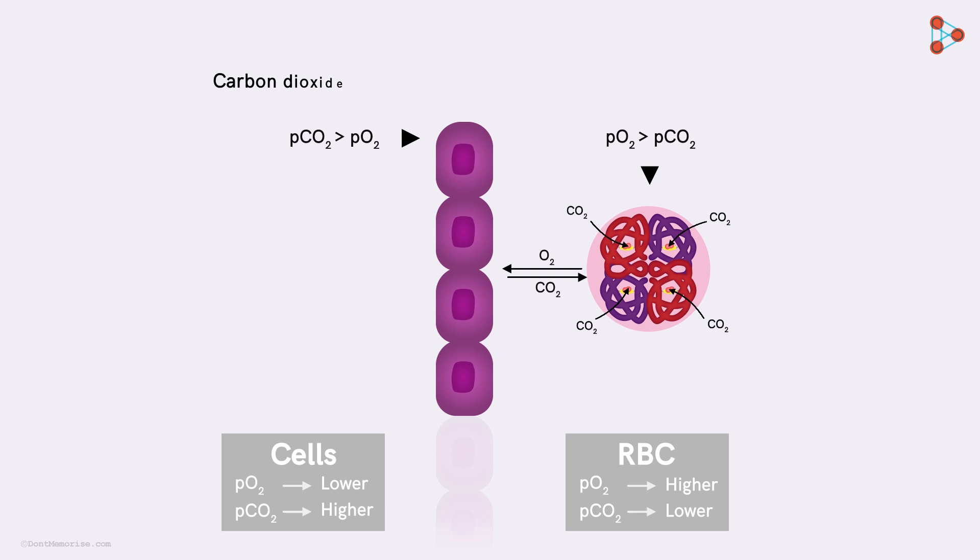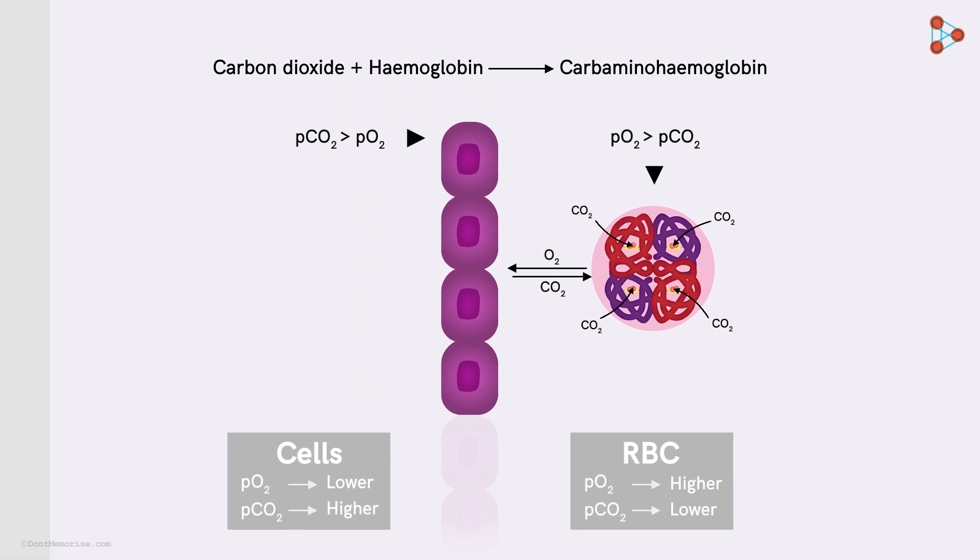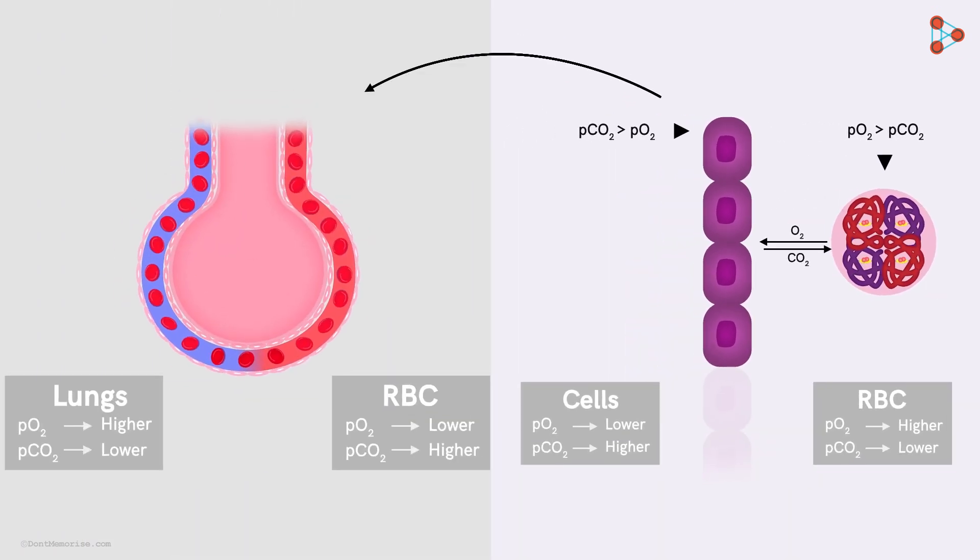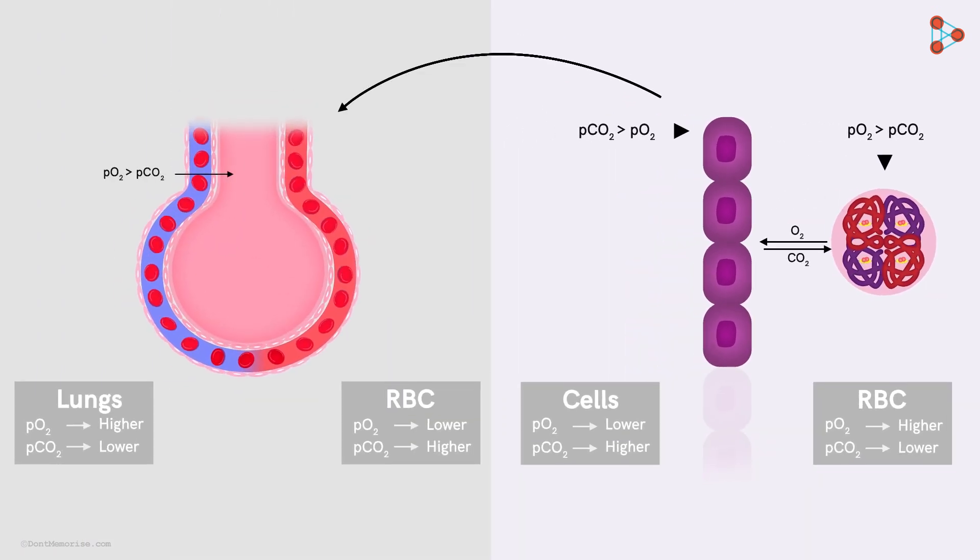The binding of carbon dioxide leads to the formation of another complex named the carbaminohemoglobin. This is then carried to the lungs where the partial pressure of carbon dioxide is still lower. And here, the scene is totally reversed.